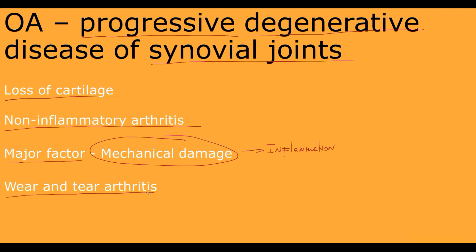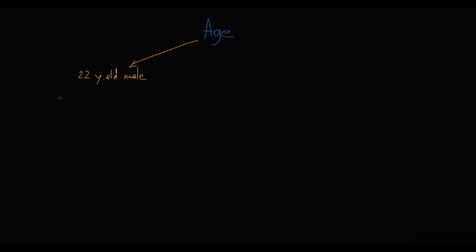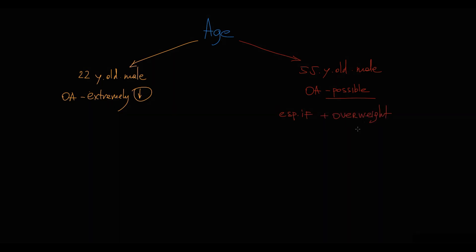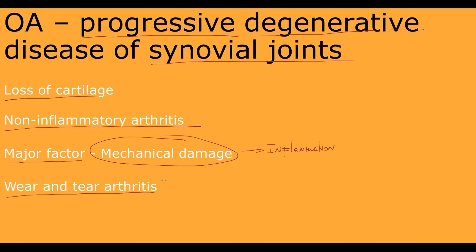In clinical practice or examinations, age is an extremely important factor — the probability of osteoarthritis in a 22-year-old is extremely low, but in a 55-year-old, especially an overweight person, osteoarthritis is definitely the diagnosis to consider. Also pay attention to additional risk factors such as trauma, congenital pathology, or intense physical activity. Osteoarthritis progresses over a very prolonged period of time because mechanical injury destroys cartilage slowly, in contrast to rheumatoid arthritis where inflammatory damage causes much more rapid cartilage degradation.